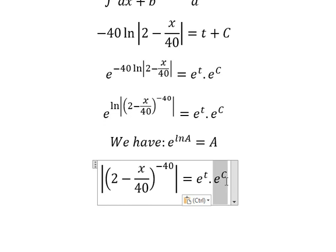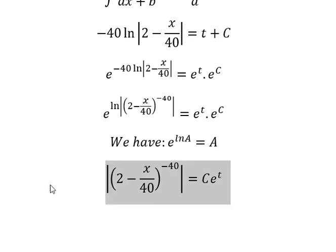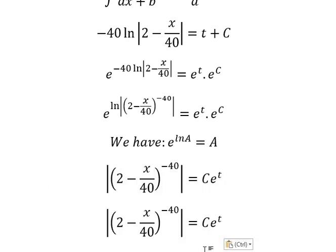We know that e to the power of C is still about the constant, because C can be about positive or negative number, so we can cancel the absolute value in here.